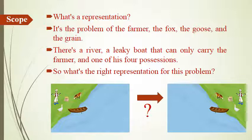At the left side of the figure, a farmer is standing with all his possessions — a fox, a goose, and grain. All four must travel from one side of the river to the other. Using thinking, perception, and action, we can solve this problem so that all possessions safely reach the other bank of the river.